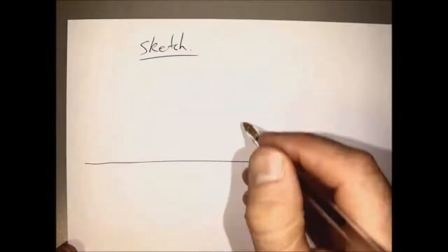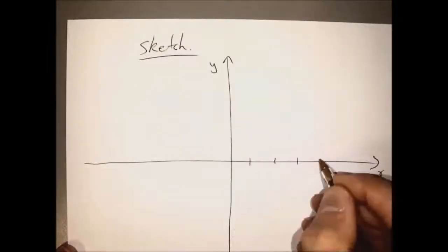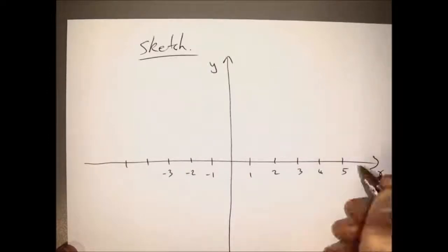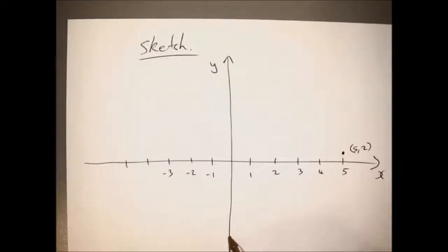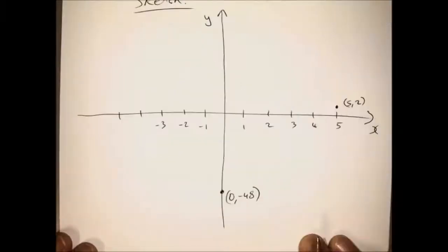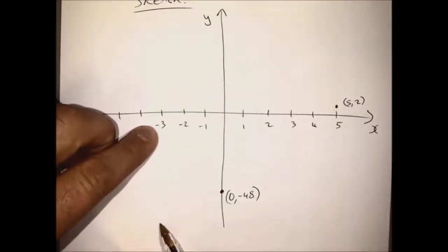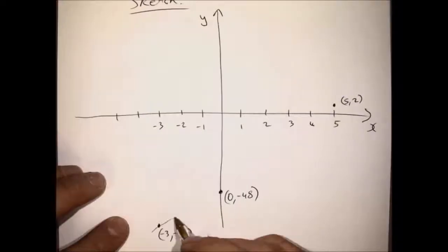And we're going to do a rough sketch. The first point we'll draw in there will be 5, 2. Then we'll draw in our y-intercept, 0 minus 48. And finally our third point there, minus 3 minus 78, will be approximately here.